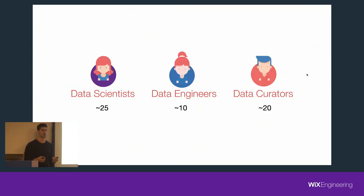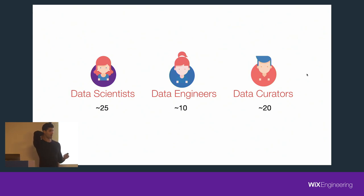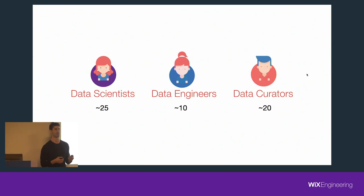The data science group at Wix is based in three locations — two of them are in Ukraine, and one in Israel, here in Tel Aviv. It's comprised of approximately 25 data scientists, 10 data engineers depending on how you define the term, and 20 data curators, which are a team responsible for data labeling procedures and data QA, mainly for image data.